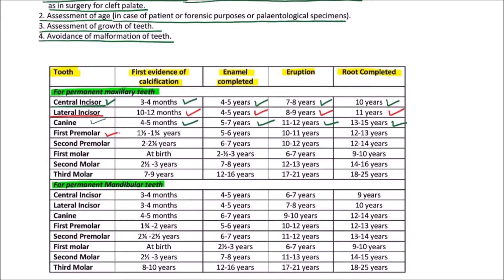For the maxillary first premolar, the first evidence of calcification occurs by 1¾ to 4 years, enamel is completed by 5 to 6 years, eruption occurs between 10 to 11 years, and the root is completed by 12 to 13 years.